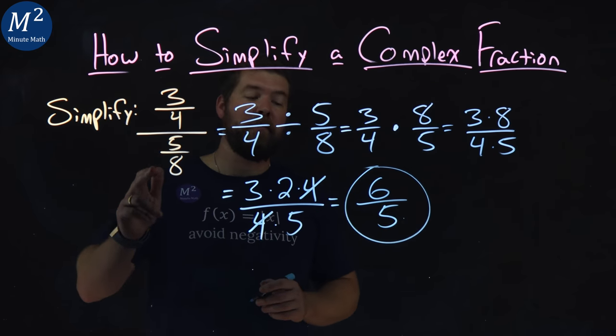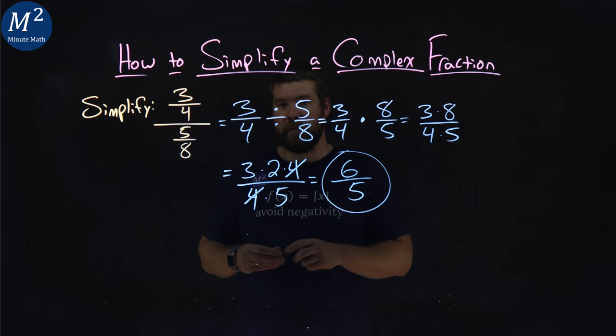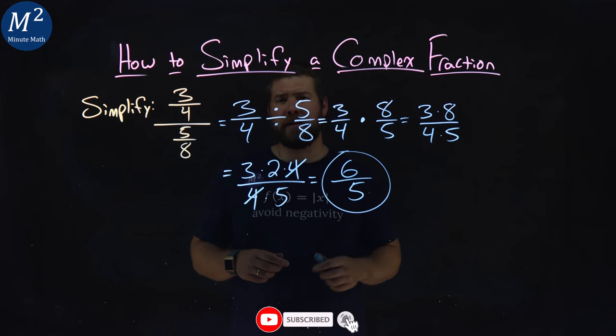Three-fourths divided by five-eighths is equal to six-fifths. I hope you learned something here on how to simplify a complex fraction.